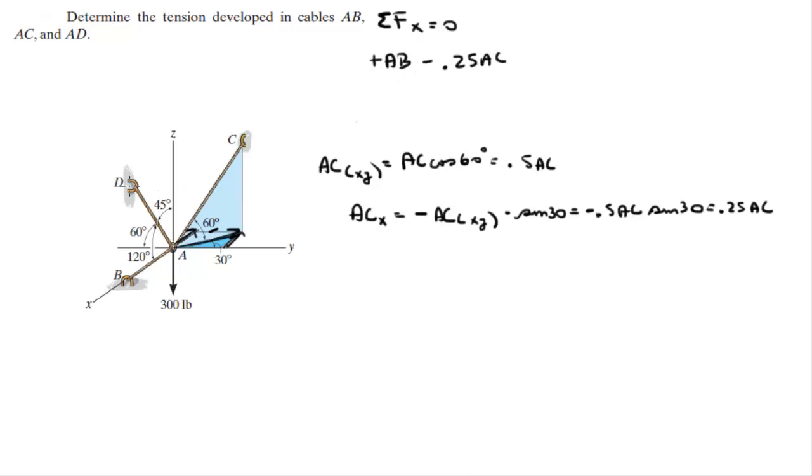And then we have AD. AD's component on the X can easily be found by doing AD times the cosine of the angle it forms with the positive X axis, which is given. So it's AD times the cosine of 120, which comes out to be negative 0.5 AD, and that is equal to 0. So this is our first equation. Let's call it equation 1.